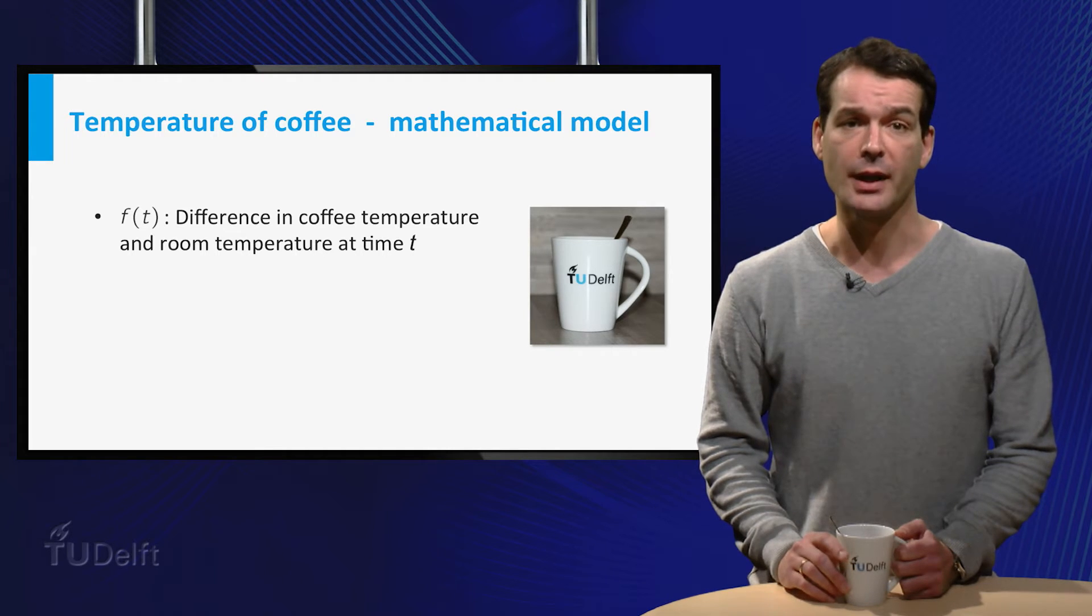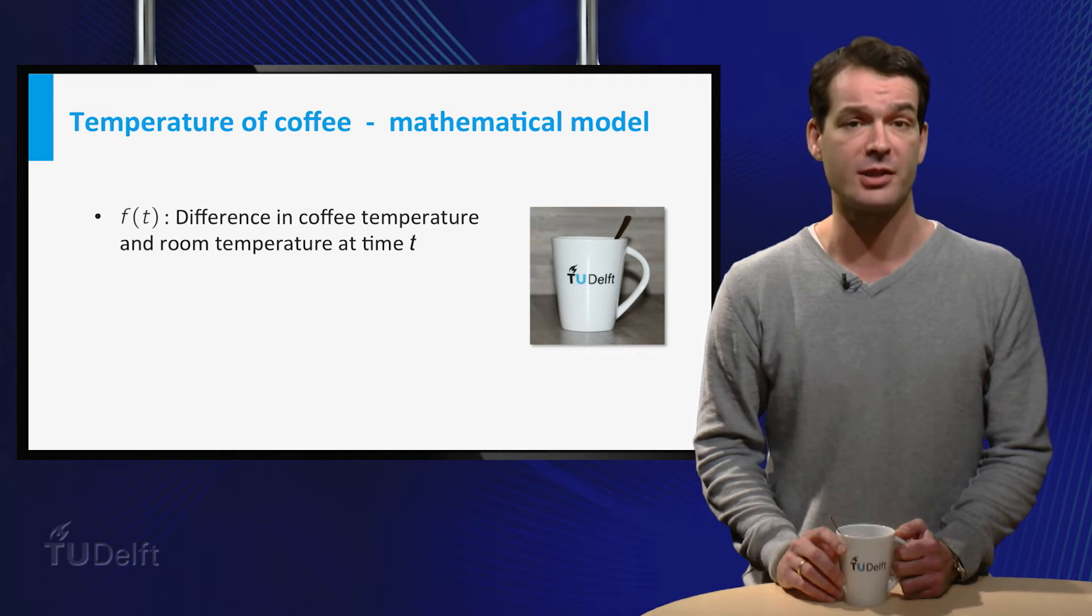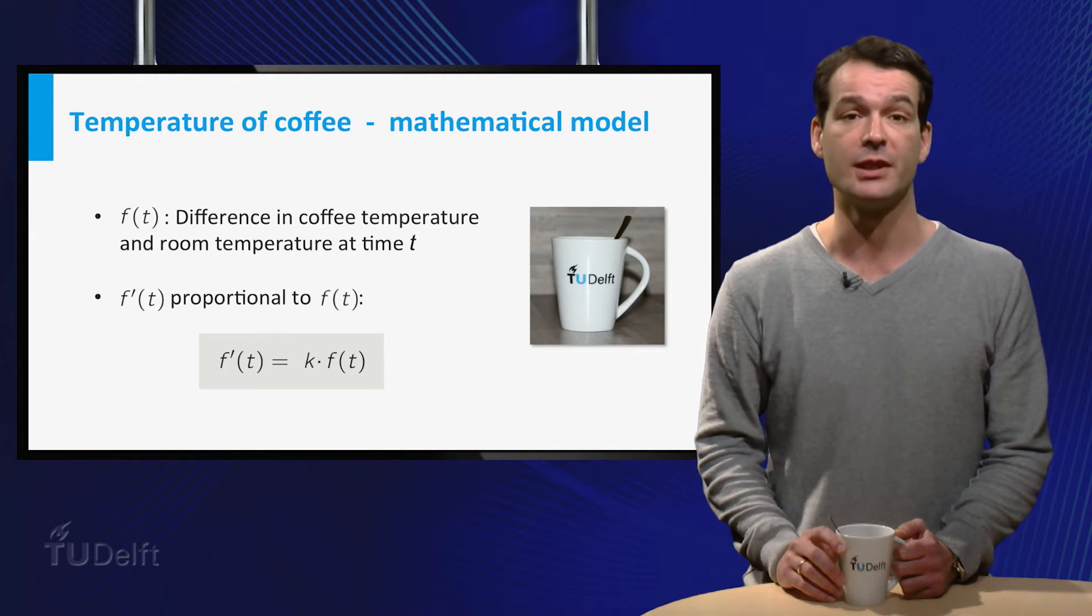Then the rate of cooling is the derivative of f. This is proportional to f itself, so there is a constant k such that the derivative of f at time t is equal to k times f(t).